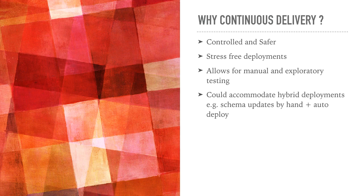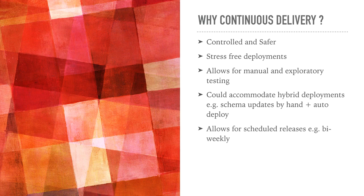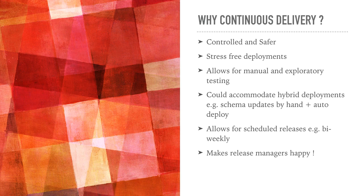Continuous delivery also allows for manual and exploratory testing, and accommodates hybrid deployment scenarios. For example, schema updates may be done by hand through scripts with manual verification, while front-end deployments are fully automated. You can also allow for scheduled releases — for example, instead of deploying a thousand times a day or every three months, you may want to deploy every two weeks in an agile, stress-free way. And of course, it makes release managers happy.